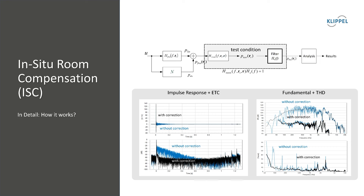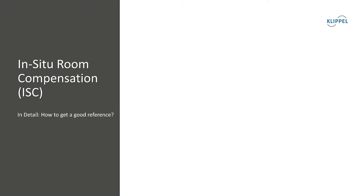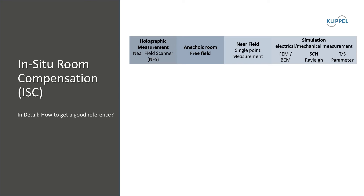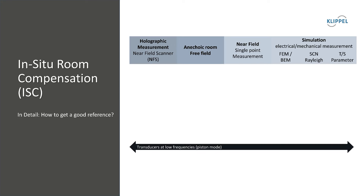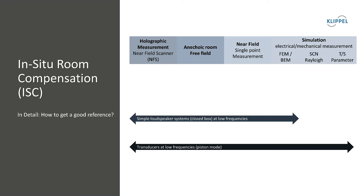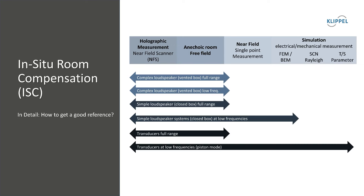The only thing we need is a reference measurement. There are several ways to get a reference, depending on the complexity of the device under test. We can determine a free-field reference by a holographic measurement or a measurement in a good anechoic chamber. Near-field measurements or simulations based on electrical and mechanical measurements are also possible. For a transducer at low frequencies, field-small parameters can model it very accurately. For closed-box systems, a near-field measurement is a common way to correct low frequencies. However, when the complexity of the sound source increases — for vented-box designs or at higher frequencies when the cone breaks up — simple models have their limitations.